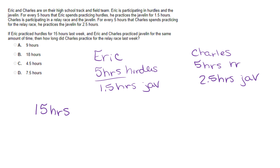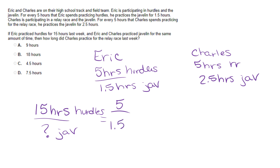So 15 hours for hurdles for Eric — how much time did he spend on the javelin? We have to start there. We have five to one and a half, so we're going to cross multiply: 15 times 1.5 equals five times our question mark.